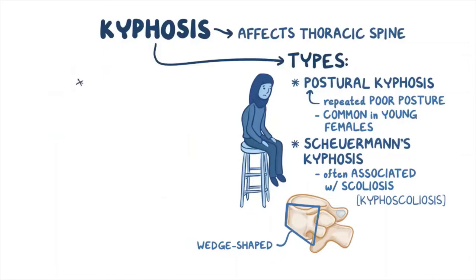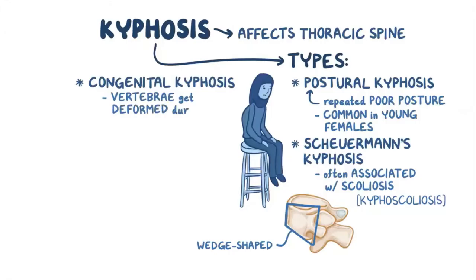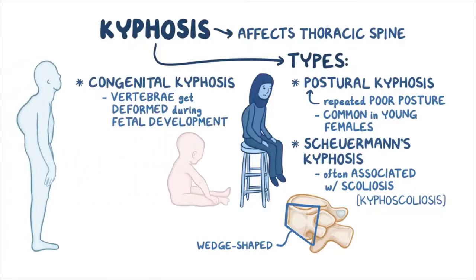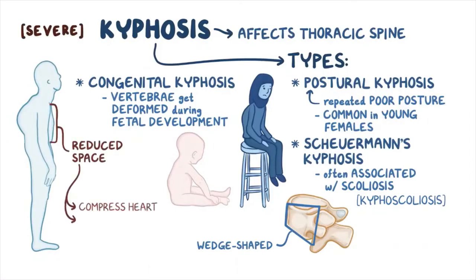There's also congenital kyphosis, which develops when vertebrae get deformed during fetal development, resulting in a baby born with kyphosis. If the condition is severe, it can reduce the space in the thoracic cavity, compressing the heart and preventing the lungs from fully expanding.